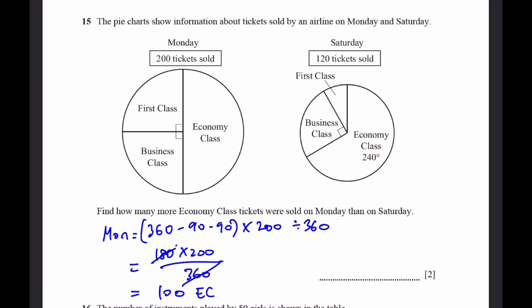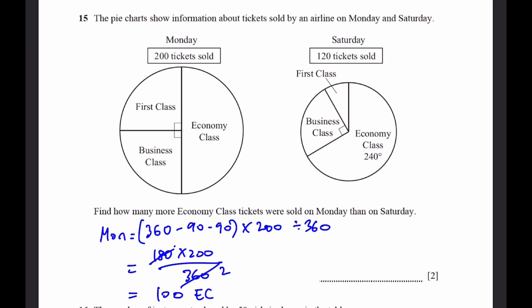For Saturday, we have 120 tickets sold and 240 degrees out of the full thing is economy class. It'll be 120 into 240 by 360. You can cancel this to 2 by 3. That's 80 economy class tickets. The Monday tickets sold is 100. And for Saturday, it's 80. If you subtract 100 minus 80, that'll be 20 more. That's the answer.